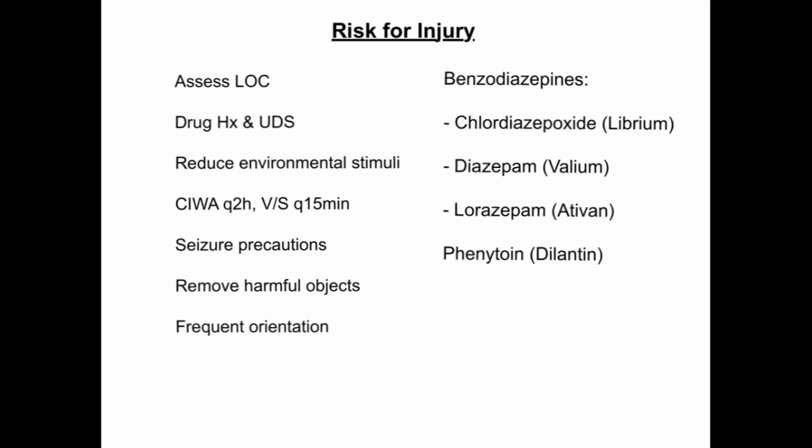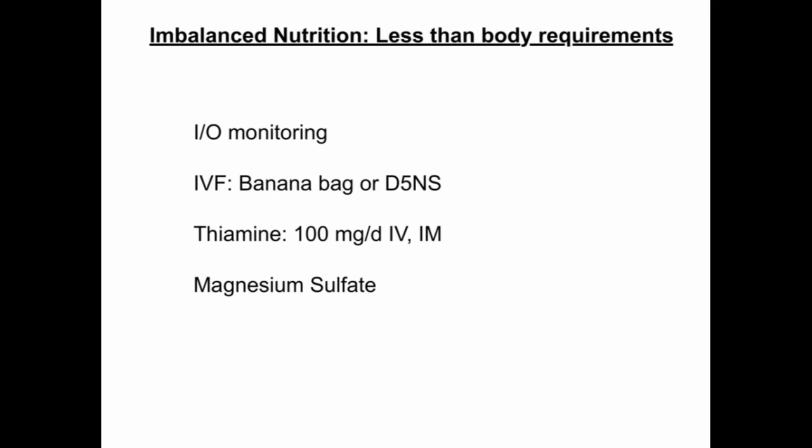For imbalanced nutrition, monitor the patient's intake and output, fluid and electrolyte balance, and encourage PO intake. IV fluids may be used, including a banana bag, which replaces folate and thiamine, and/or D5 normal saline. Thiamine is a standard for DTs because manifestations can mask Wernicke's encephalopathy; 100 mg daily is recommended and can be given IV or IM. Magnesium sulfate is another standard to replace magnesium loss.